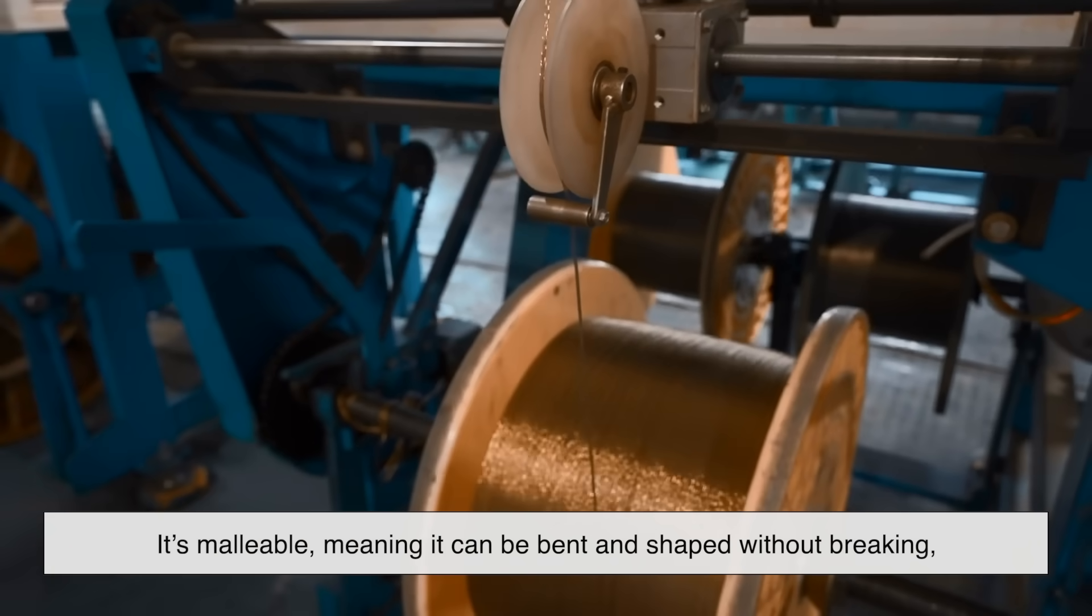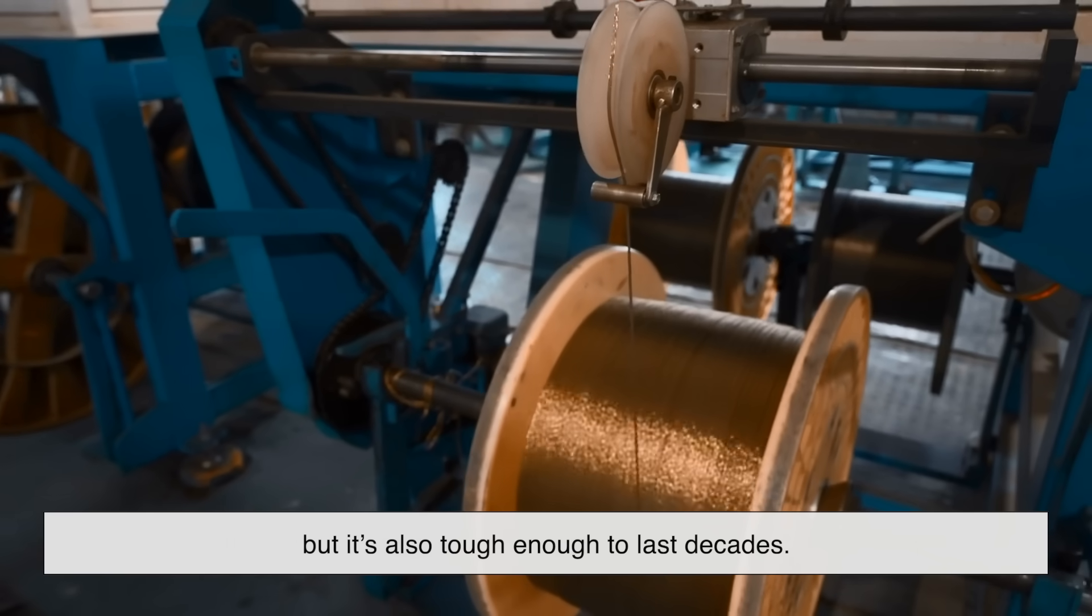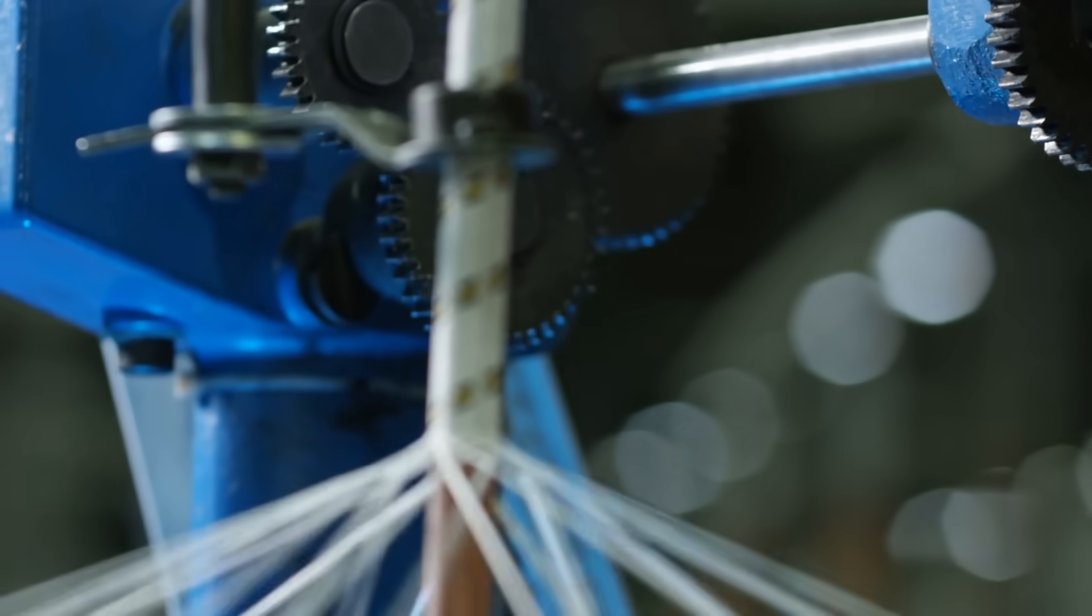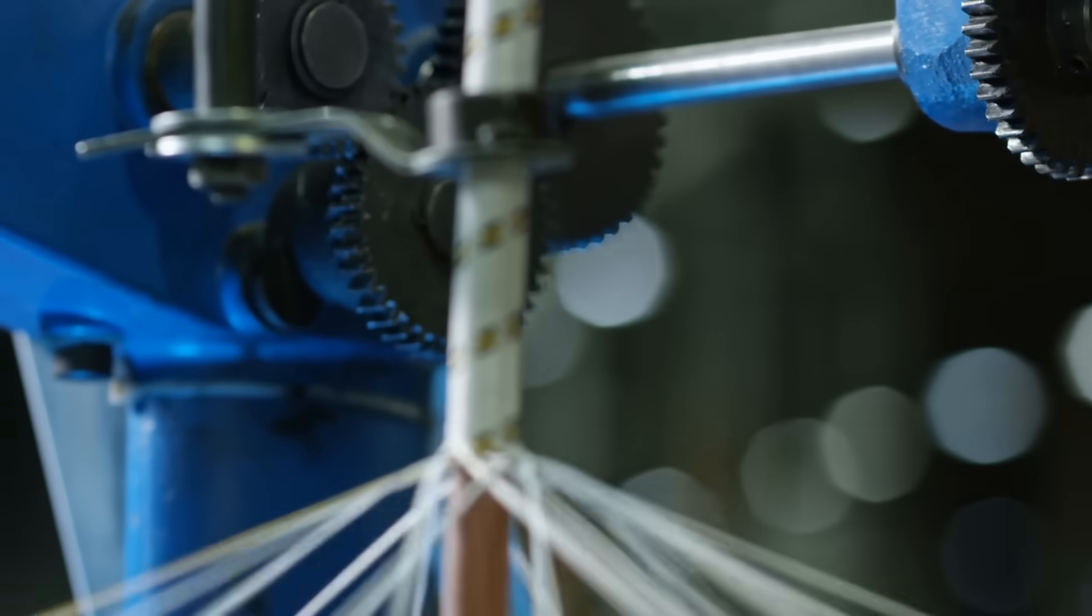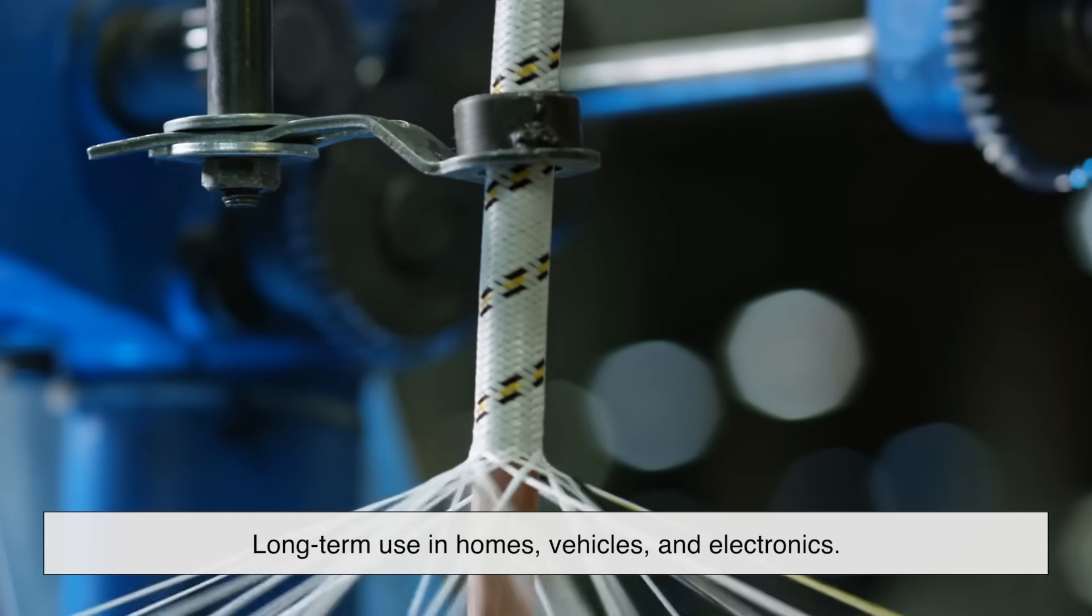One of copper's biggest strengths is that it balances high conductivity with durability. It's malleable, meaning it can be bent and shaped without breaking, but it's also tough enough to last decades. Copper doesn't corrode easily, especially when it's coated or insulated, and it handles heat pretty well. This combination makes it ideal for long-term use in homes, vehicles, and electronics.